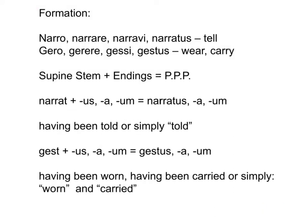First let's look at how we make the perfect passive participle. Participles come from verbs. You will need to know the four principal parts of a verb in order to make a perfect passive participle out of it. Go to the fourth principal part — another name, the supine — and take off the -us ending.